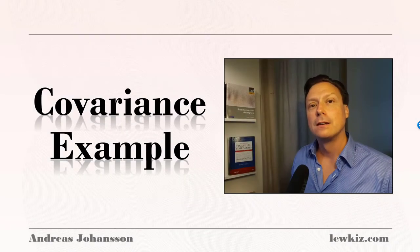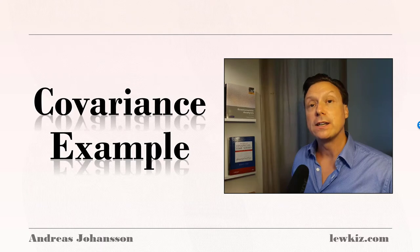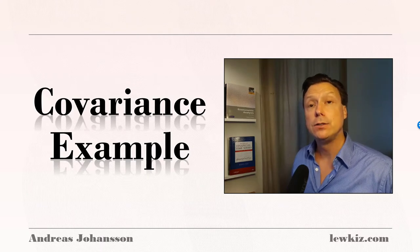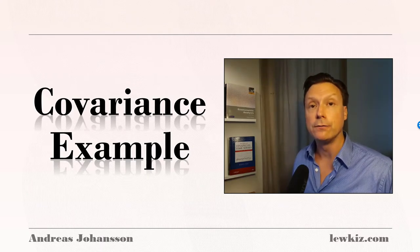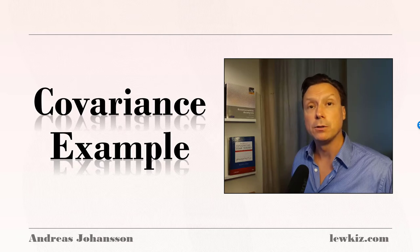Covariance example. Now we know that we can find the relationship between two random variables by calculating the covariance. Let's do an example to practice this.